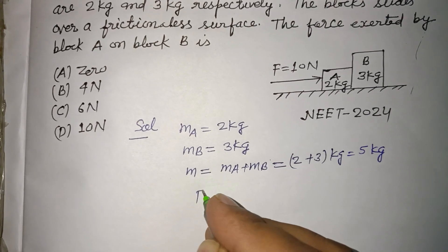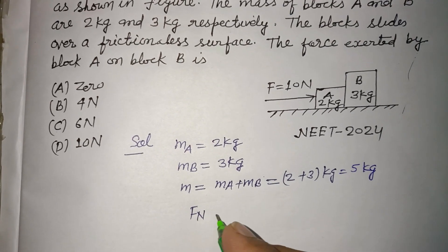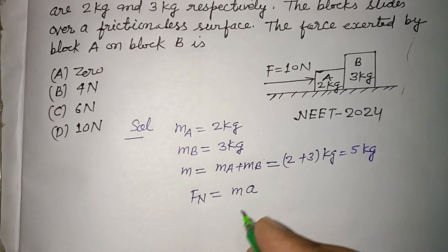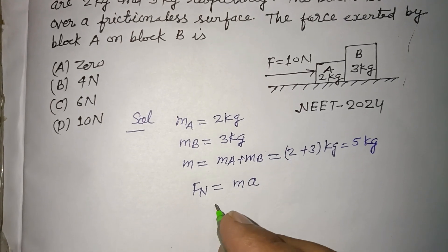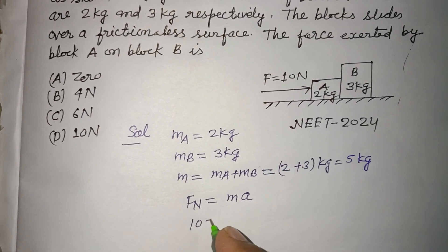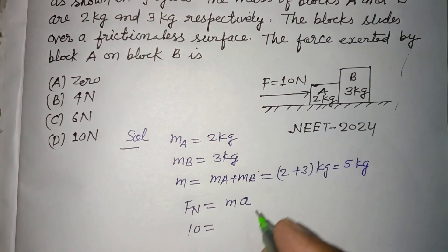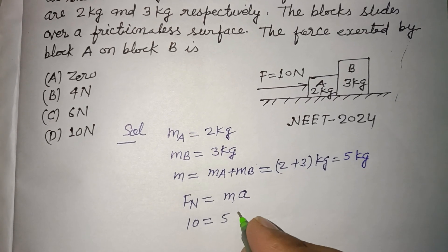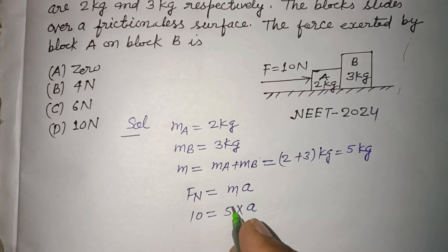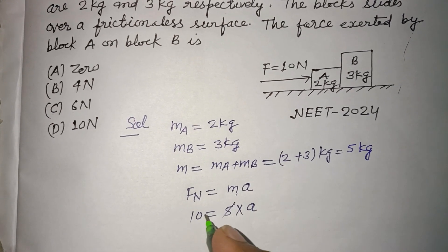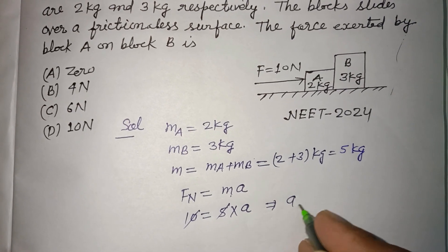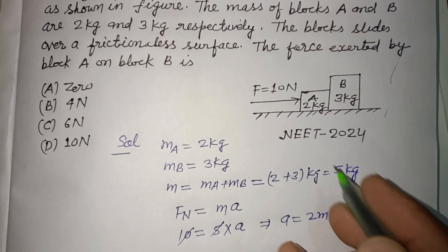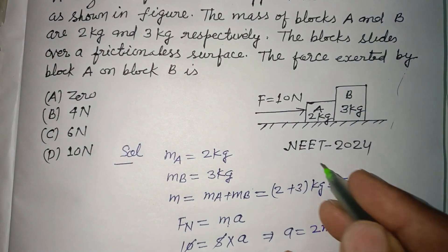So F_net equals mass into acceleration. F_net is given as 10 N, mass is 5 kg, so acceleration A equals 10 divided by 5, which is 2 meters per second squared. That is the acceleration of the total system.